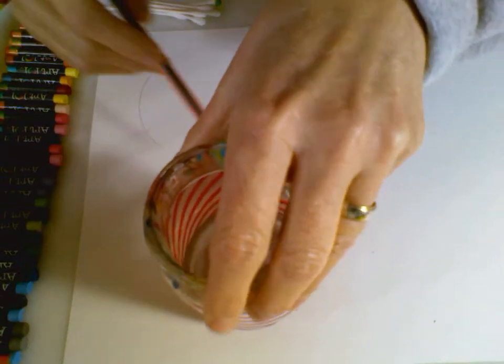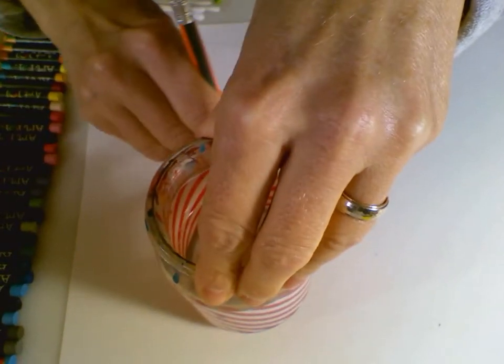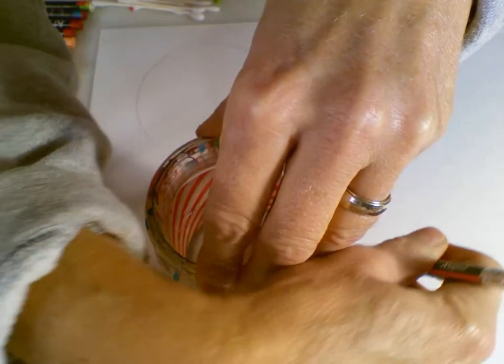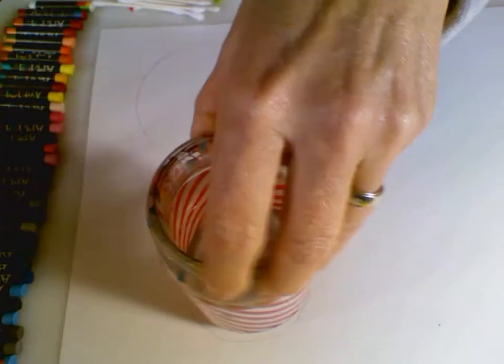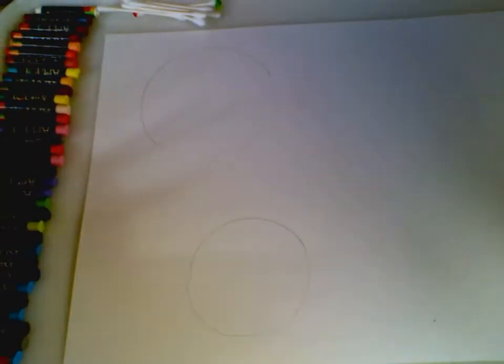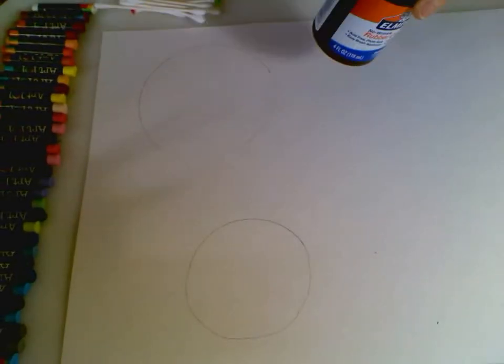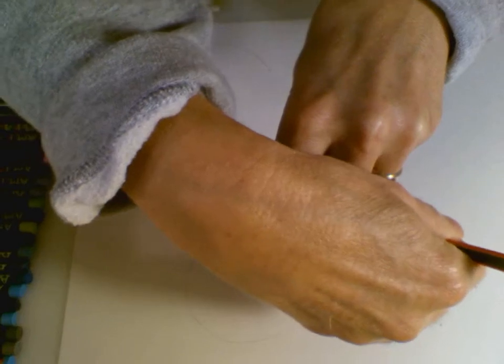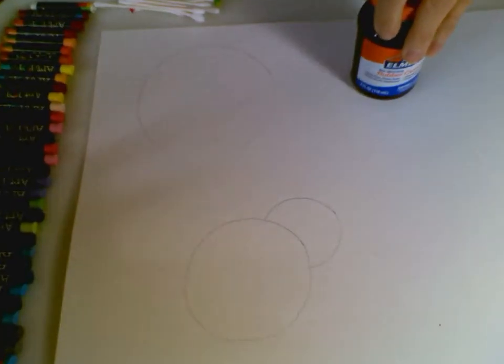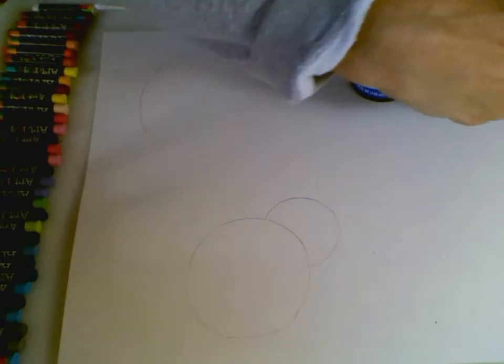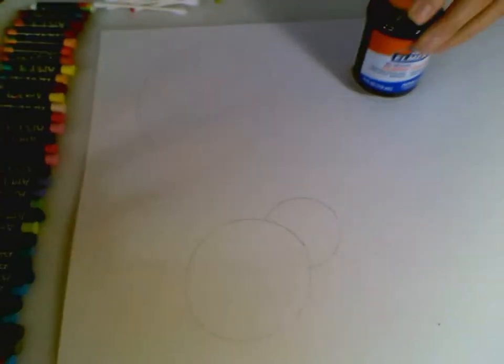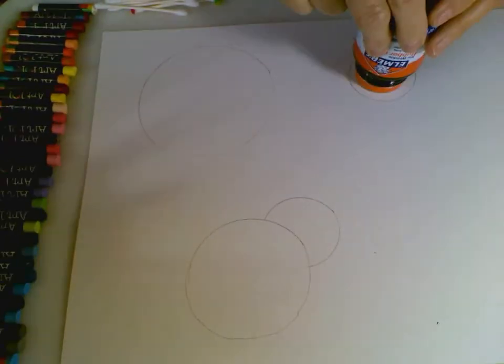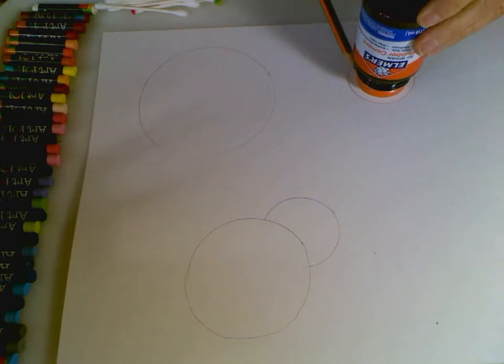You could also use, if you have a nice jar, maybe that could be used for another size circle. I use this jar for my water, my watercolor paints. You could also use a glue container. He liked to overlap shapes. He liked to repeat shapes. You could use this side for a big circle and you could use the middle one for a small circle.